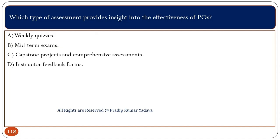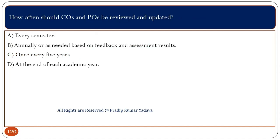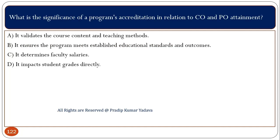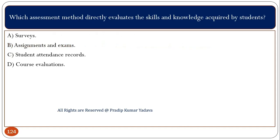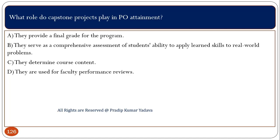Which type of assessment provides insight into the effectiveness of POs? That is basically capstone projects and comprehensive assessments. How often should CO and PO be reviewed and updated? Basically, annually or as needed based on feedback and assessment results. What is the significance of program accreditation in relation to CO and PO attainment? It ensures the program meets established educational standards and outcomes. Which assessment method directly evaluates the skills and knowledge acquired by the student? Here we are talking about assignment and exam. What role do capstone projects play in PO attainment? They serve as a comprehensive assessment of a student's ability to apply learned skills to real-world problems.